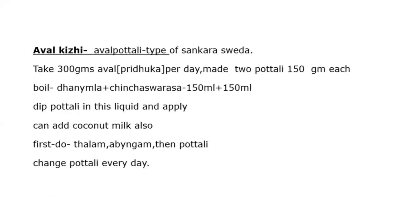What is Avalkiri? Kiri means poultice. This is a type of Sankara Sweda. Take 300 grams of Aval (Prithuka in our texts) per day. Made in two poultices, 150 grams each. Boil 150 ml plus 150 ml each. Mix the Dhanyamla and Chinja Rasa — please boil it. Dip the poultice in this liquid and apply. Coconut milk can also be added if needed. This type of Sweda is Sankara Sweda.